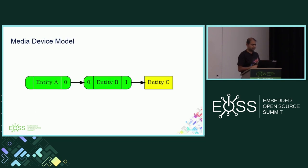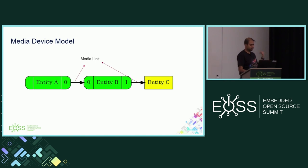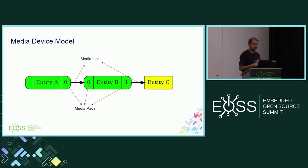Here's a simple diagram of the media device model with three entities: entity A, entity B, and entity C. The black arrows are media links, and the connection points are media pads. Entity C looks like it doesn't have a media pad, but it has an implicit pad, which is why it's not shown — but you can always connect to it.